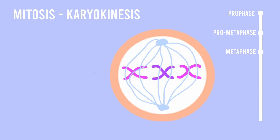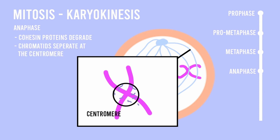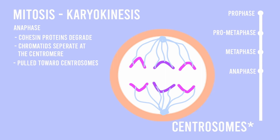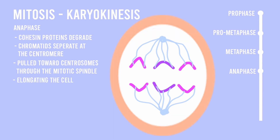The next step is known as the anaphase. During the anaphase, the cohesin proteins holding the sister chromatids together degrade, causing the chromatids to separate at the centromere. Each chromatid, now referred to as a chromosome, is pulled toward the centrosomes located at the opposite poles of the cell. This is done by moving the chromosomes through the microtubule structure formed by the mitotic spindle. The pulling of these microtubule structures away from each other also has the added effect of elongating the cell.